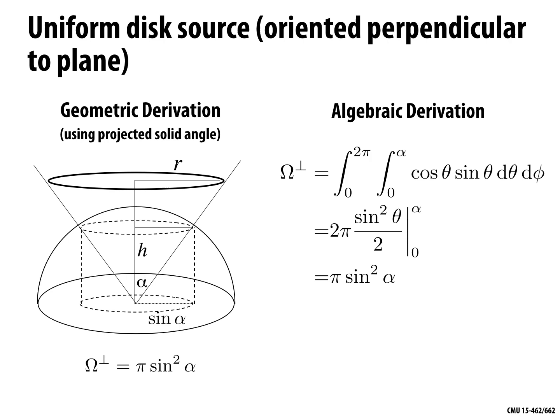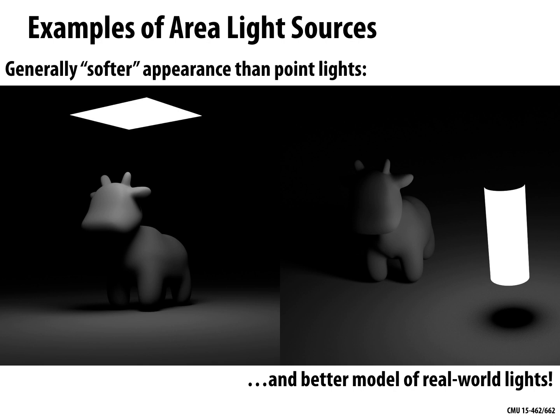For most light sources, you won't be able to get a closed-form integral — we're showing simple examples where irradiance can be written directly in terms of measurable quantities. In general, numerical techniques will be needed for these integrals, and that's coming in the next few lectures. Generally, area light sources produce a softer appearance than point lights because emitted light is spread over a larger area, which is a better model for how real-world lights behave.